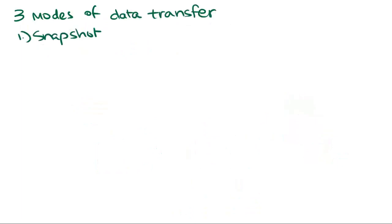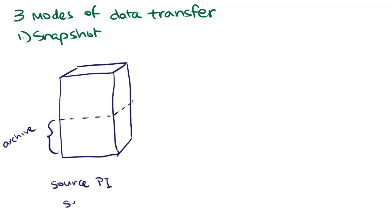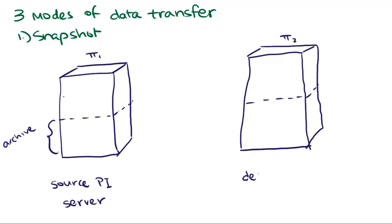There are three modes of data transfer for the PI2Pi interface. The first is snapshot data collection. In this mode, the interface will sign up the tags for updates on the source PI server to receive snapshot values. The snapshot values accumulate in the update queue assigned to the interface on the source PI server.